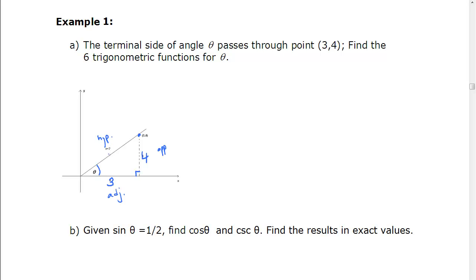So first step, we need to figure out what is the length of the hypotenuse. Well, we have Pythagorean Theorem. So r² = 4² + 3². So r² is going to be 25, which means r is going to be 5. So we know this side now is 5.